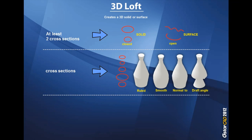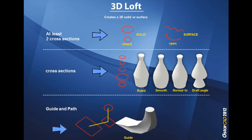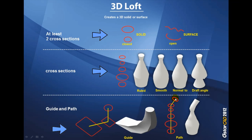What more options does 3D Loft offer? You can do a 3D Loft by guide — you can have several cross sections and a guide. The guide in this case can be a single line or an arc. Then you can do 3D Loft by path. With path you can also have several cross sections, and lofting by path is characterized by having a polyline as a center line. So the path is a polyline and the guide uses single lines.